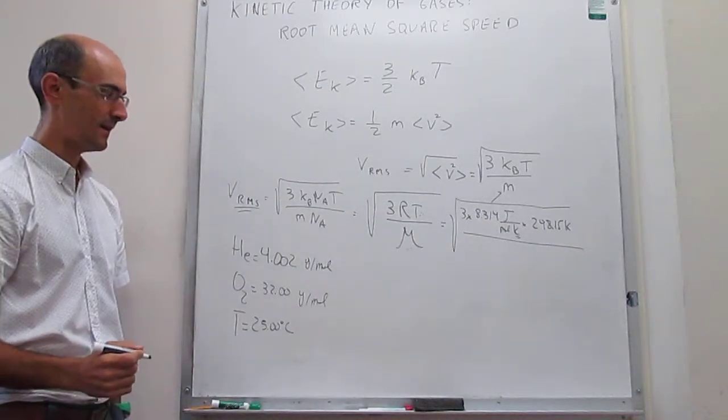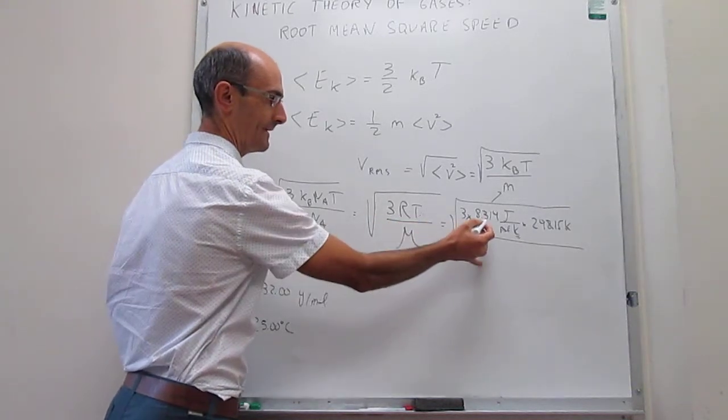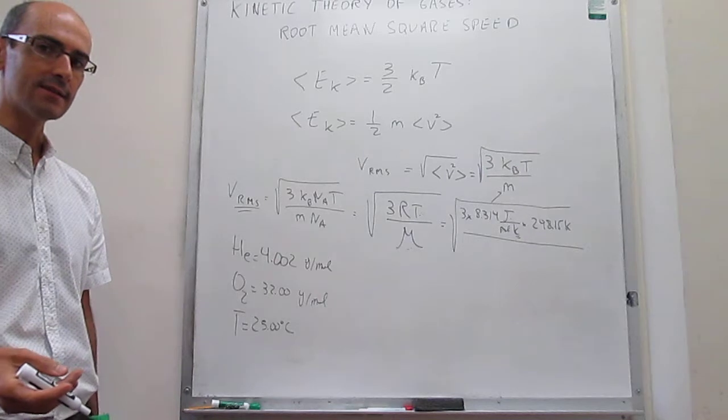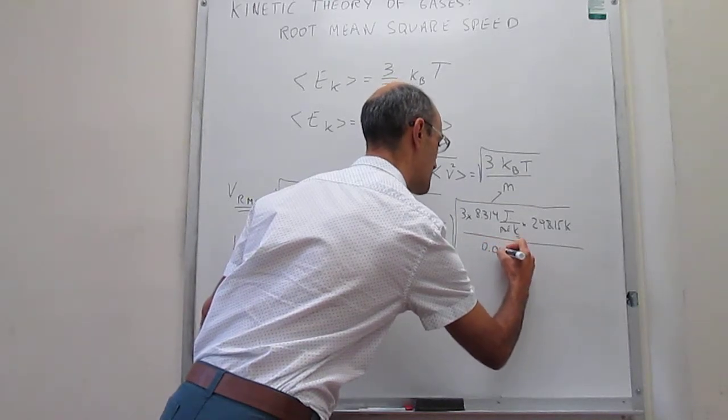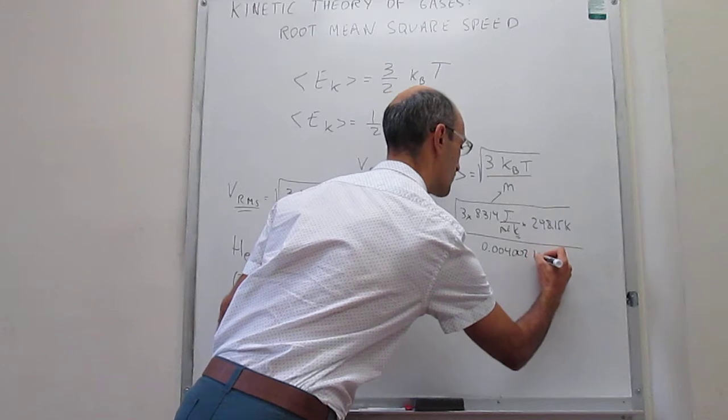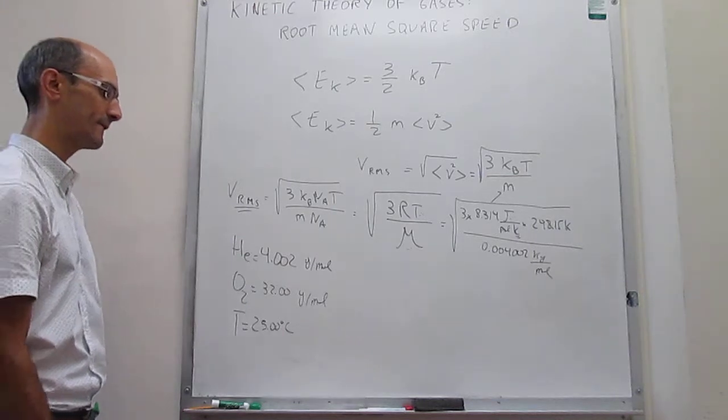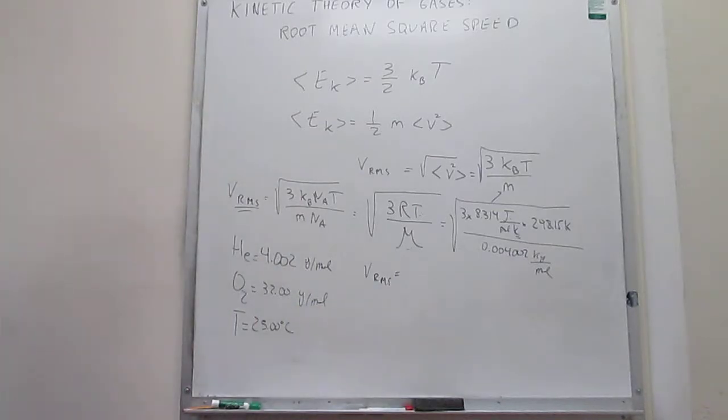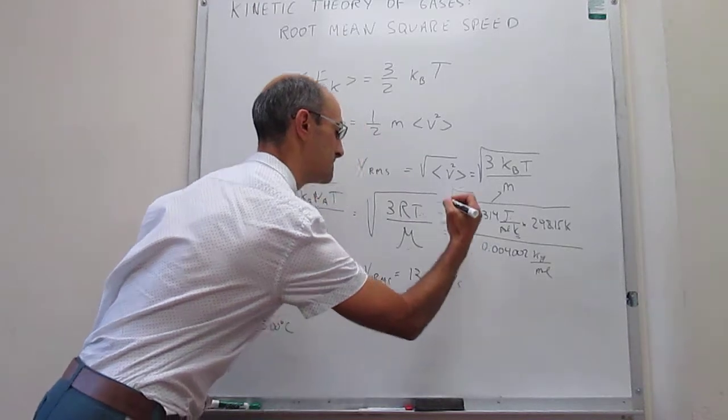We have to divide by the molar mass. Something that is a little bit tricky here is that because we're choosing to use R in the SI system, then the molar mass has to be also in the SI system. And the unit of mass in the SI system is the kilogram, not the gram. So we have to transform this to kilograms per mole. That is going to be equal to 1363 meters per second.